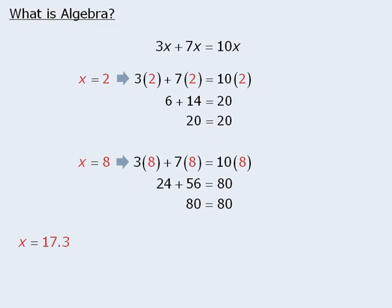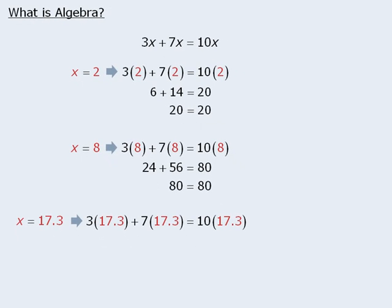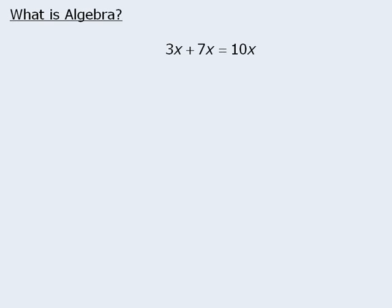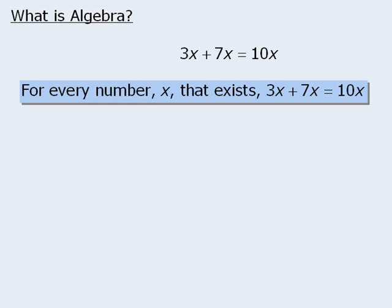Finally, if we evaluate 3x plus 7x and 10x for x equals 17.3, we see that both evaluate to be 173. From here we might make a general comment: for every possible value of x, 3x plus 7x will always have the same value as 10x.